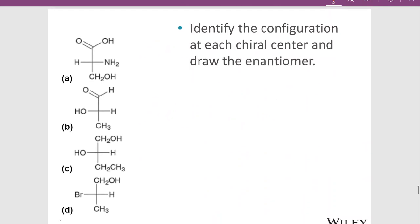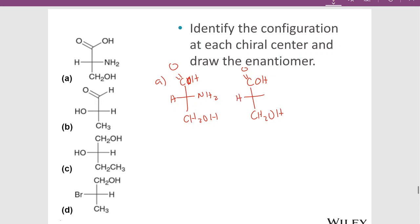Let's identify the configuration at each one of these chiral centers and draw the enantiomer. For molecule A, I've got a C double bond O and OH at the top, a CH2OH at the bottom, and an NH2 on the right with a hydrogen on the left at the middle carbon. I can draw the enantiomer very easily by swapping the configuration just at that center carbon. Notice it doesn't matter if I draw the OH on the right or the left because we have free rotation about that bond. So those are enantiomers to each other. I've only got one chiral center here — what's the configuration at that chiral center?